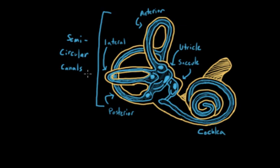And it can be kind of hard to see this 3D structure on a 2D image, but these canals are actually all orthogonal to each other, meaning that they are all at right angles to each other.